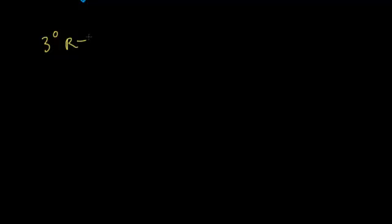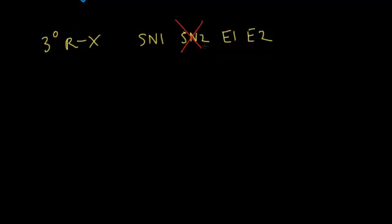Primary alkyl halides are the easiest — you just determine between SN2 and E2. Tertiary alkyl halides are the next easiest. The possibilities are SN1, SN2, E1, and E2. SN2 reactions are not likely with a tertiary alkyl halide because SN2 mechanisms require decreased steric hindrance, and a tertiary alkyl halide has too much steric hindrance. So SN2 will not occur with a tertiary alkyl halide. However, you can have SN1, E1, or E2.